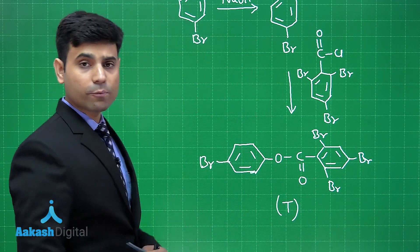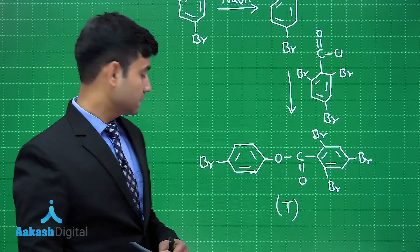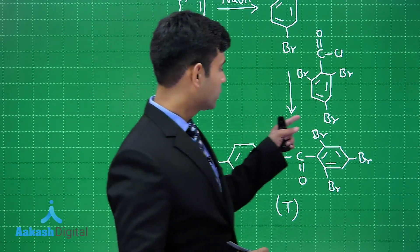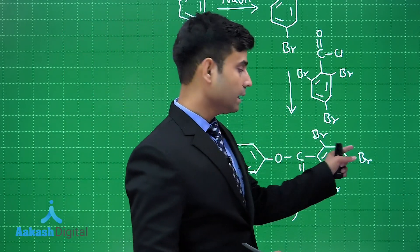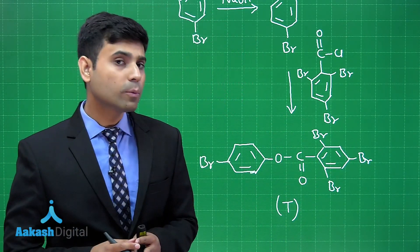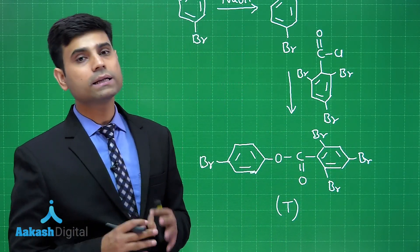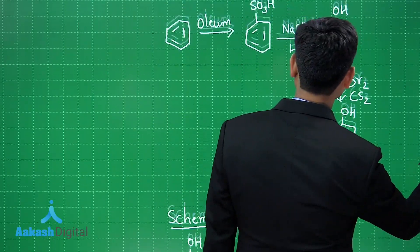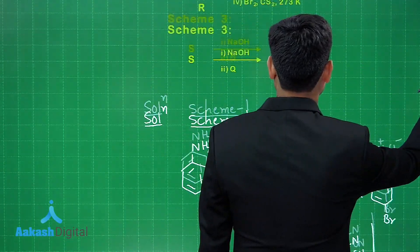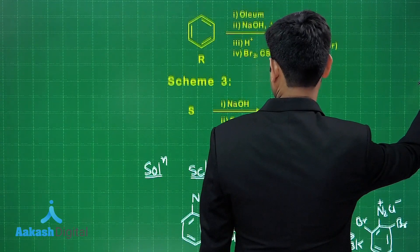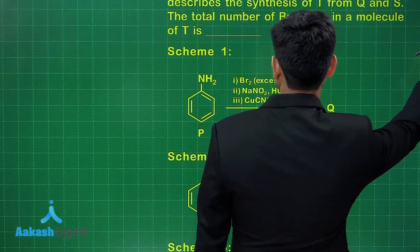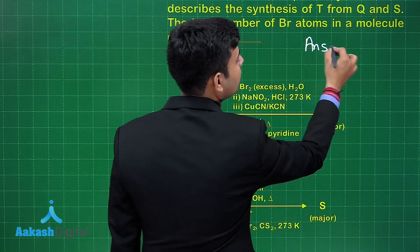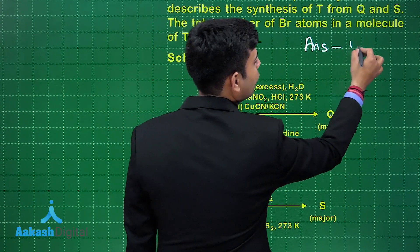Now let's count the number of bromine atoms in product T. We can see 1, 2, 3, and 4 — so there are 4 bromine atoms present in product T. Hence the correct answer for this question is 4.